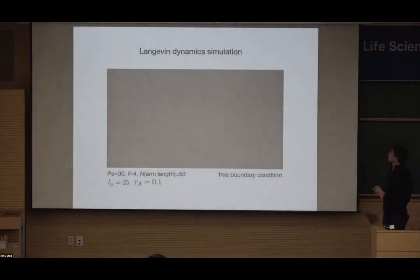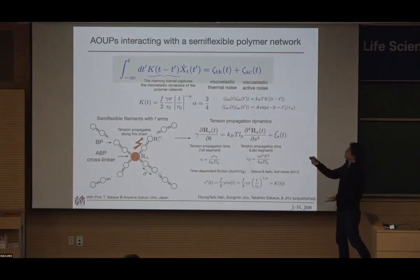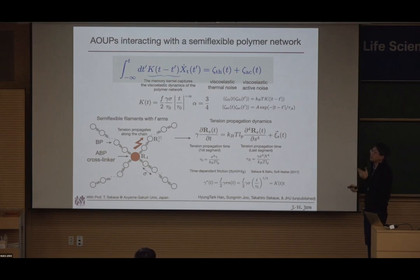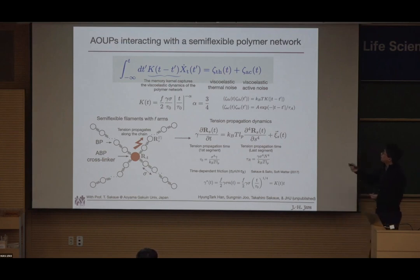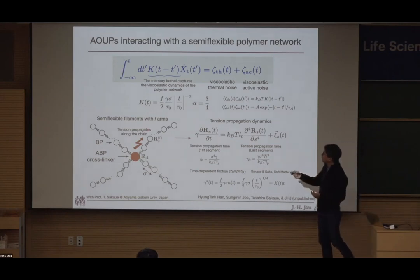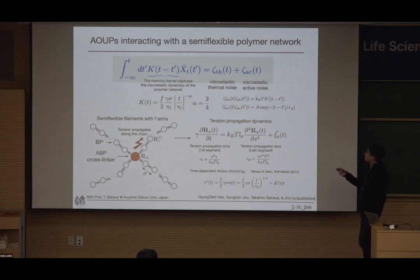We claim this dynamics can again be explained by the same GLE approach. The key question is what K should be. For the flexible polymer we exactly solved the problem and found K, but for the semi-flexible case we must deduce K from the tension propagation theory. If the active particle perturbs the system, this tension propagates along the chain. The tension propagation equation has a term specific to semi-flexible polymers, giving two timescales: tau_0 (tension propagates one segment distance) and tau_r (full chain relaxation).